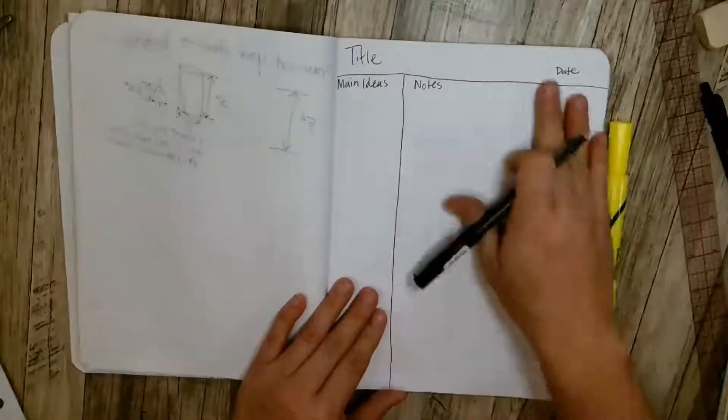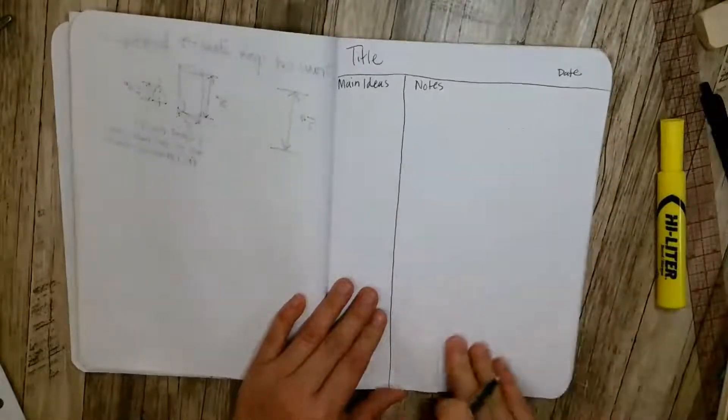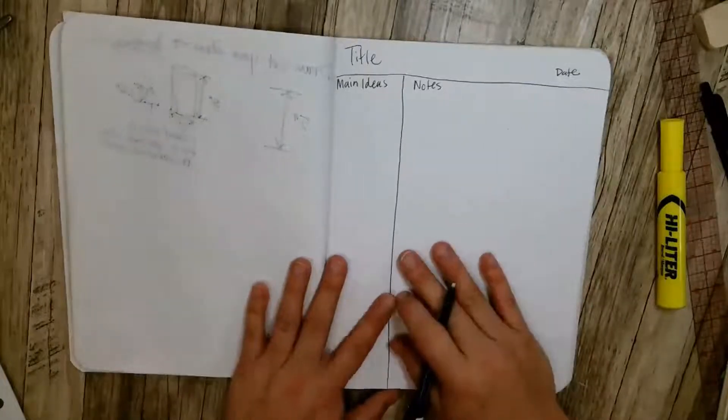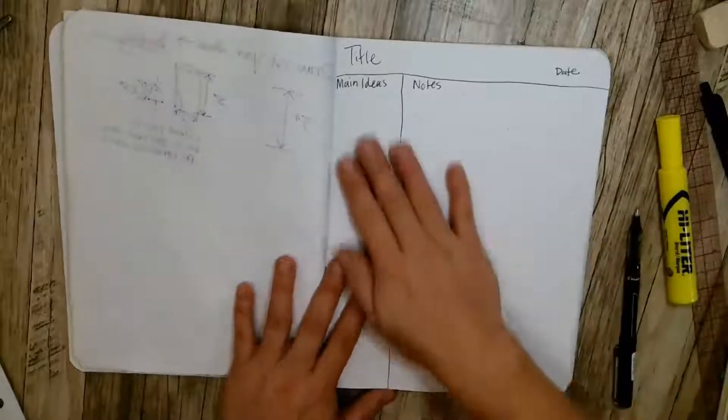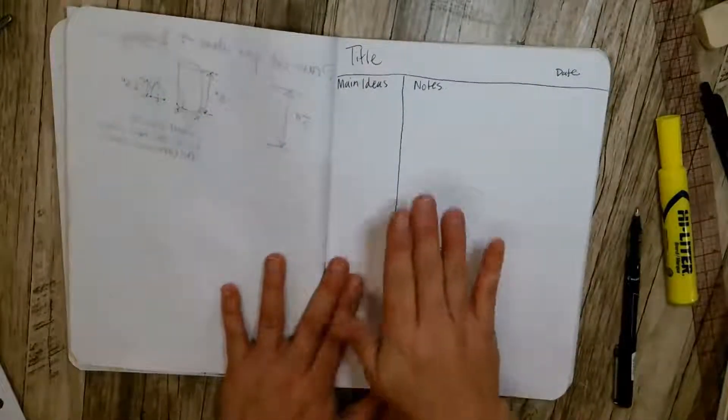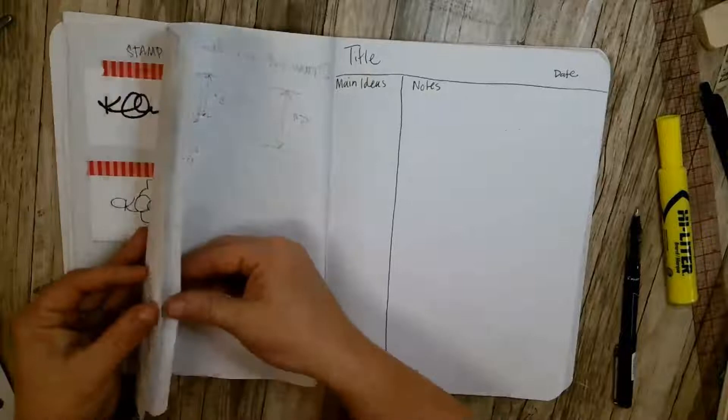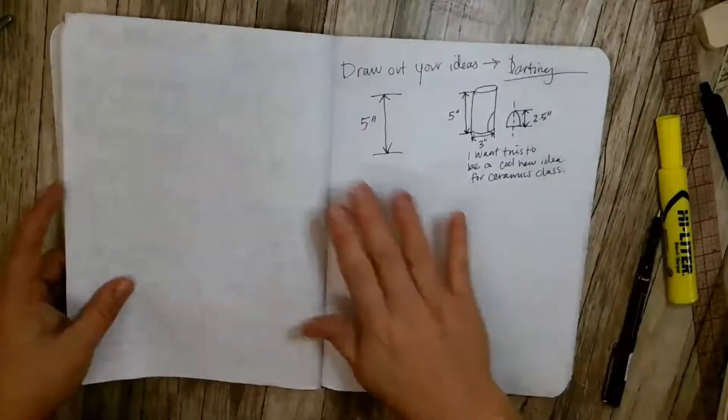You can draw in the notes section. Maybe if you find something that is applicable, you could glue it or paste it in there. So that's how we're going to take notes, this Cornell. And this is how we're going to draw out our ideas.